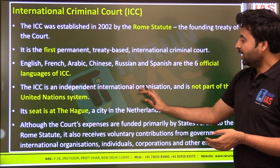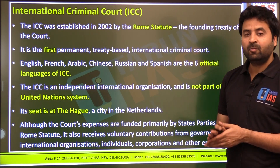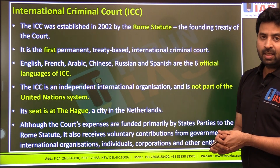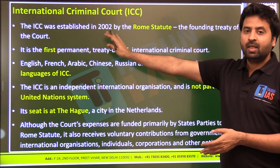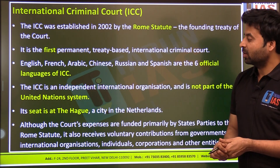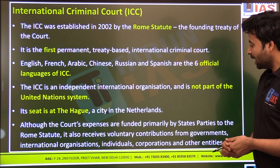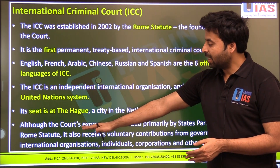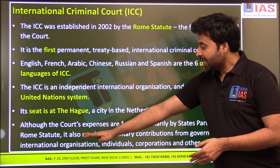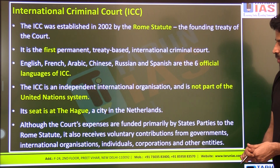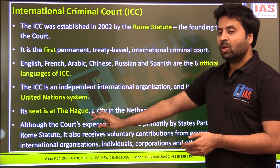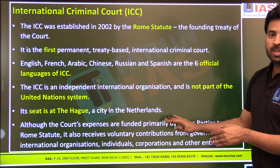The ICC is an independent international organization and is not a part of the United Nations system — a very important fact. Its seat is at The Hague, a city in the Netherlands, which is also the headquarters of the International Court of Justice. The court's expenses are funded primarily by the state parties to the Rome Statute, and it also receives voluntary contributions from governments, international organizations, individuals, corporations, and other entities.